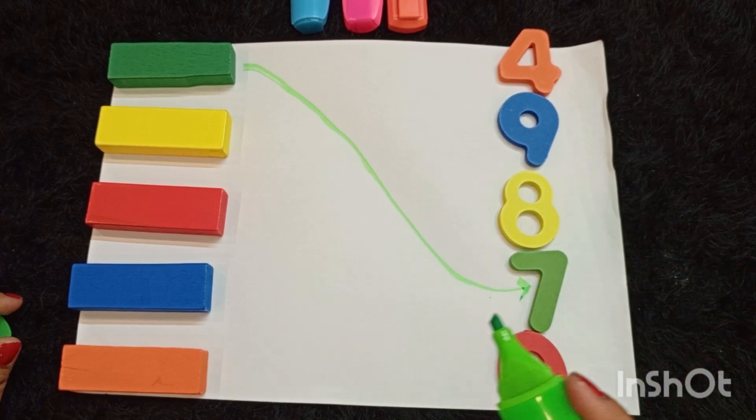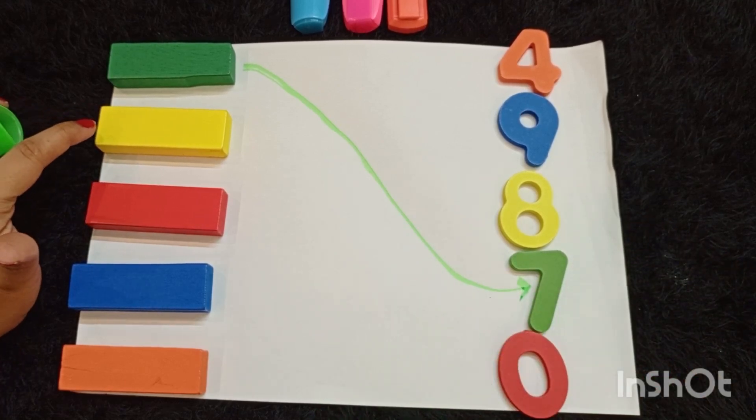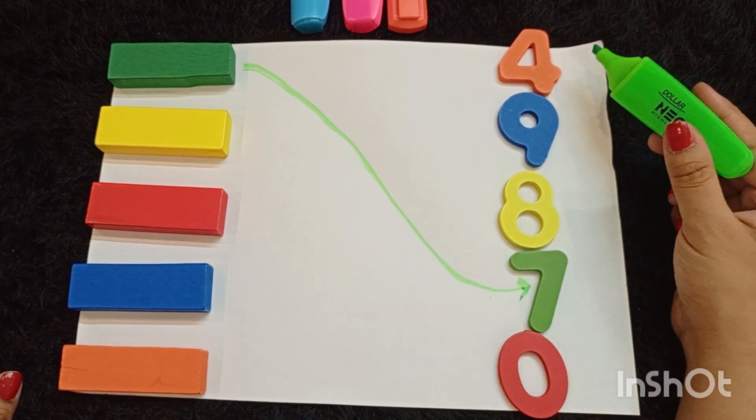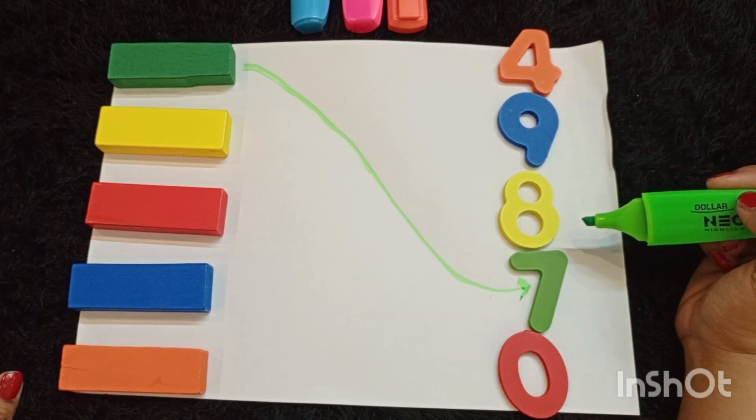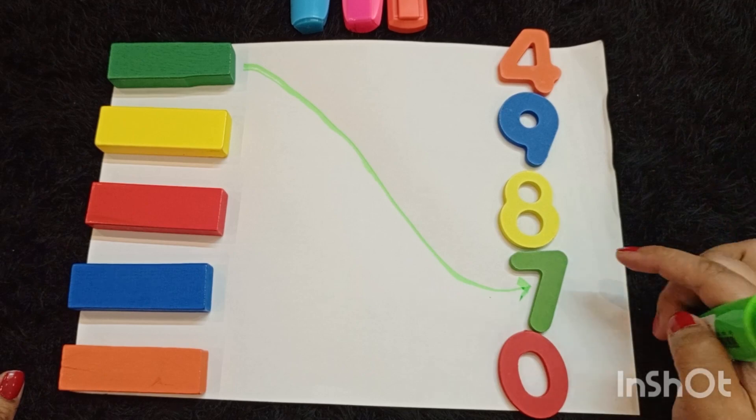Now look at the next one. This block is yellow. Which number is in yellow color? Number 8.